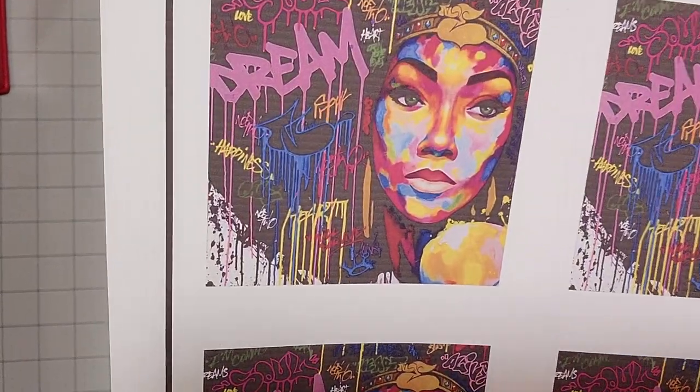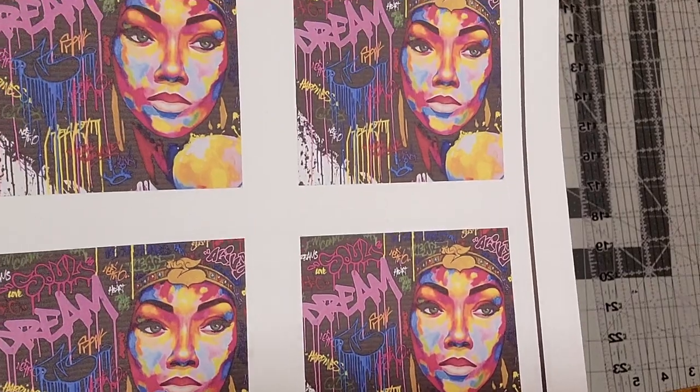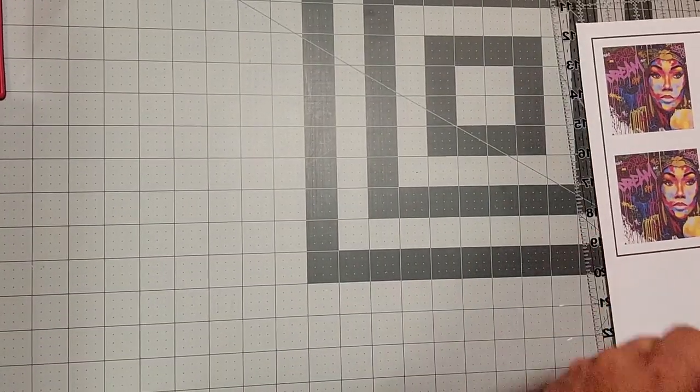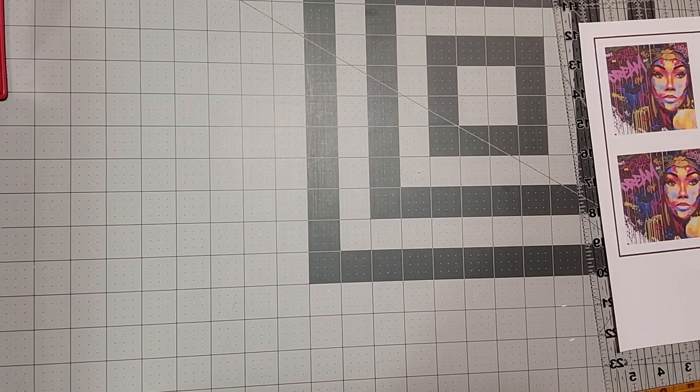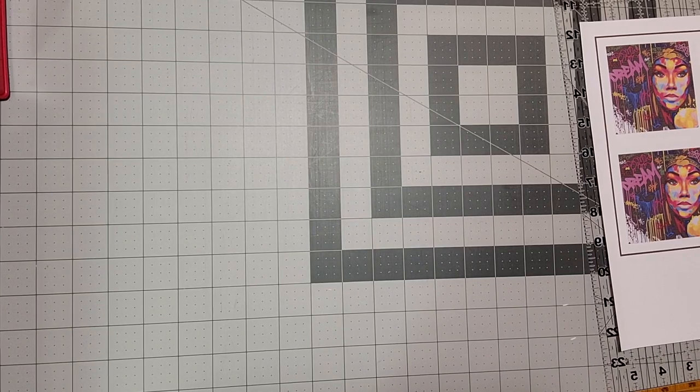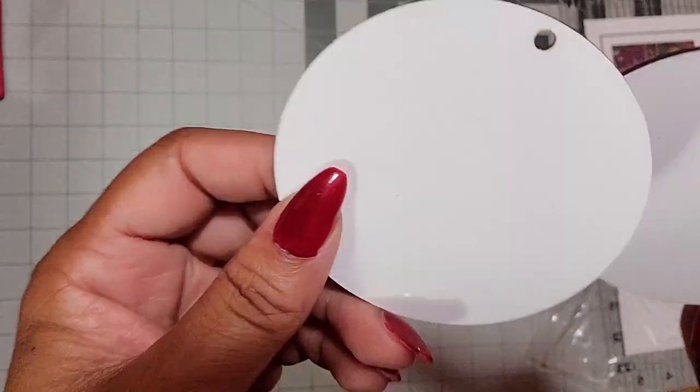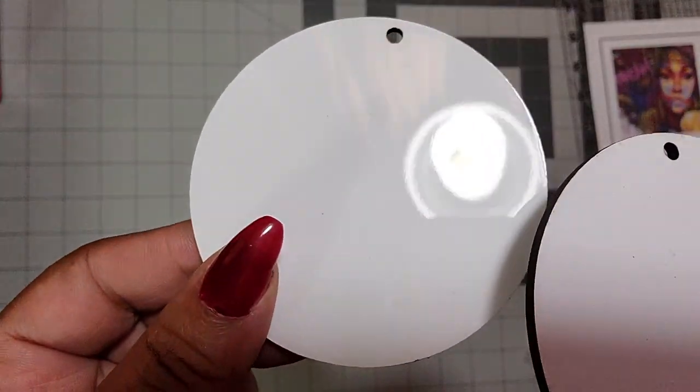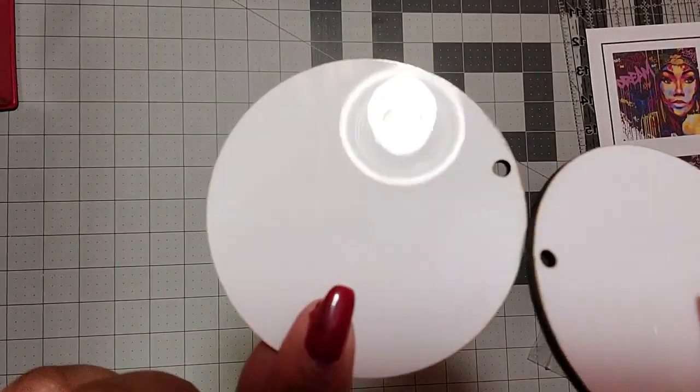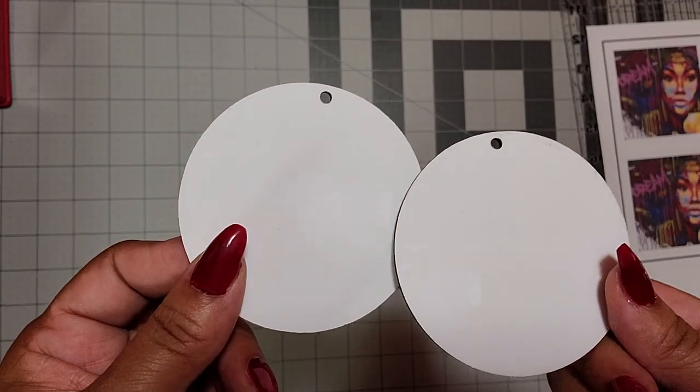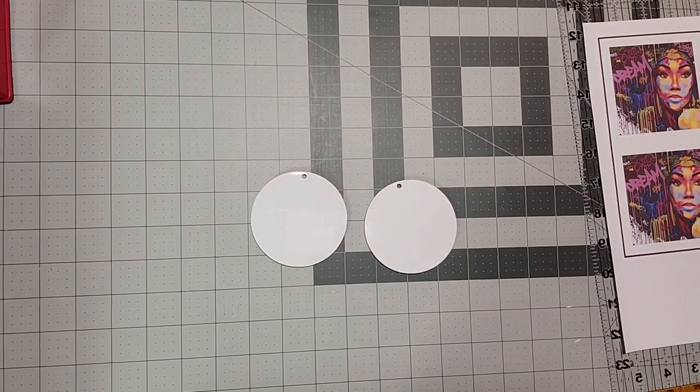I went ahead and printed out four images because I am going to sublimate these earrings front and back. I will leave the information on what type of sublimation printer I have in the description. I got these sublimation blanks from an Etsy shop, and I call her Miss Tasha. The Etsy shop is called Uniquely Yours by L-A-N, and I'll put her link in the description as well. Great customer service. I will be ordering from her again.